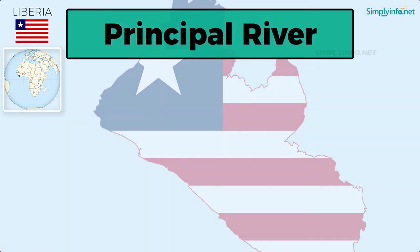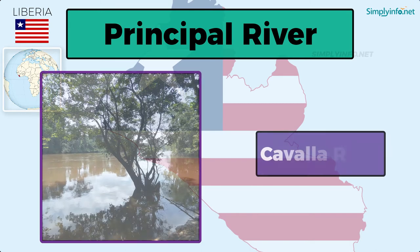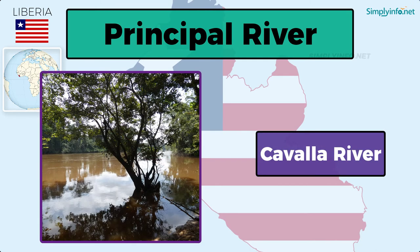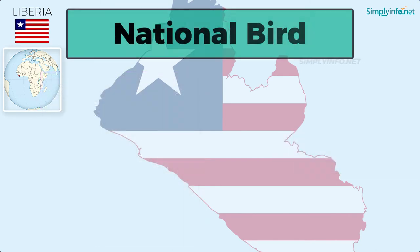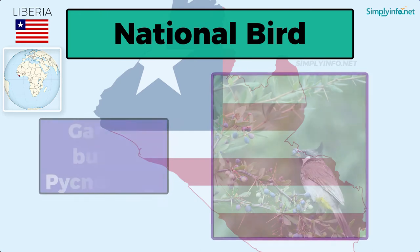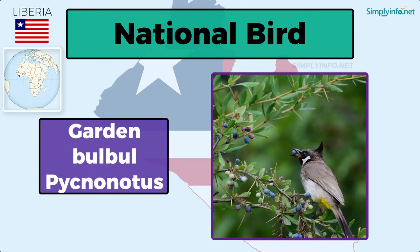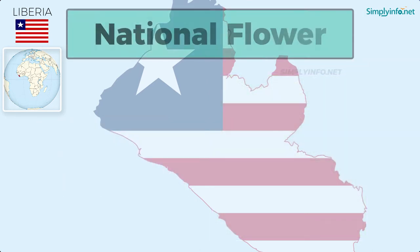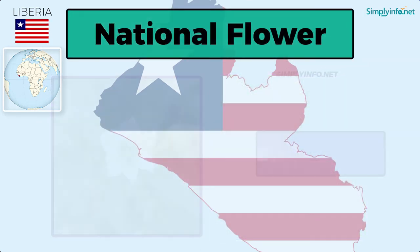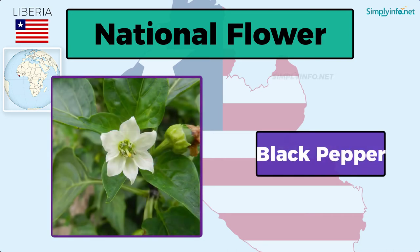Principal river: Kavala river. National bird: garden bilbil. National flower: black pepper.